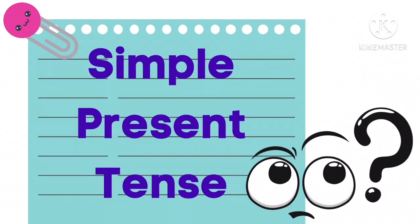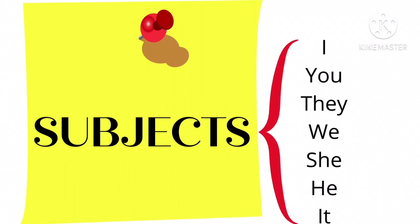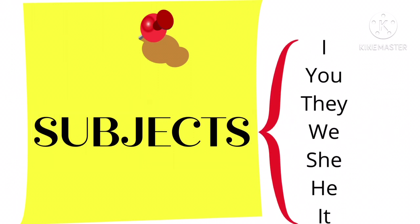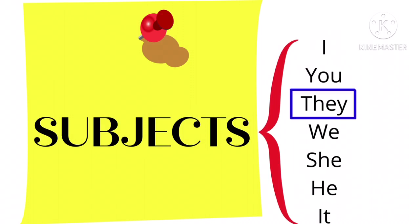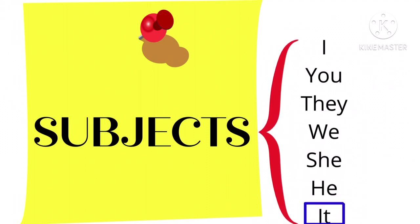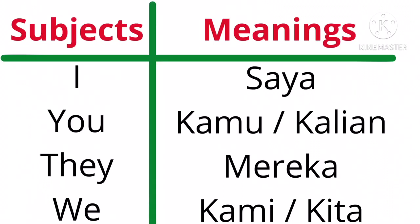Nah, dalam simple present tense kita juga perlu belajar tentang subjects. There are seven subjects in English — ada tujuh subjects dalam bahasa Inggris: I, you, they, we, she, he, it.